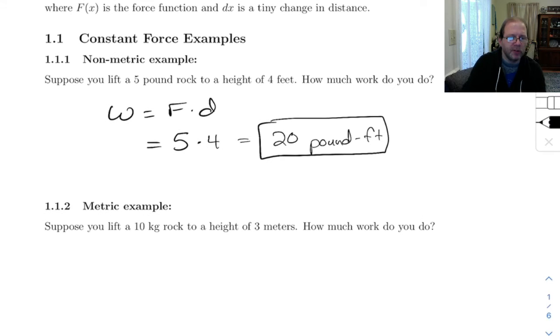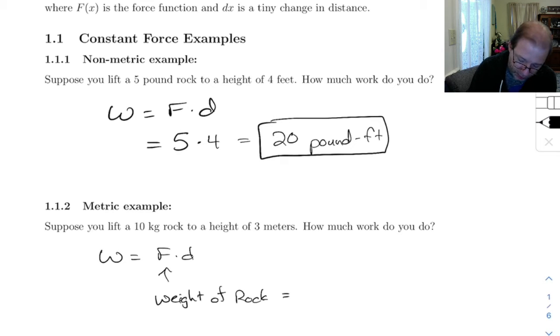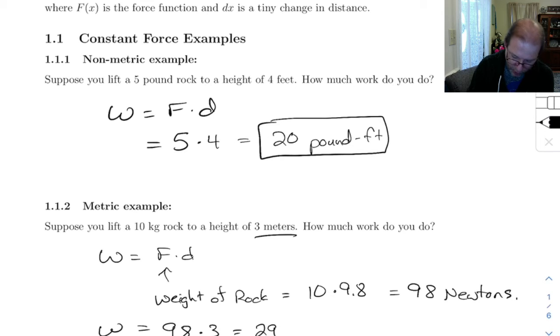All right. If we have a metric example like this where it says suppose you lift a 10 kilogram rock to a height of 3 meters, how much work do you do? Well, work is still equal to force times distance. But in this case, the force, that's the weight of the rock, and that's equal to 10 kilograms times 9.8. So that's a 98 newton rock. So the work is going to be 98 newtons times, we'll see, the distance was 3 meters, so that's 294. And the unit there is joules because we're multiplying newtons times meters. So 294 joules.